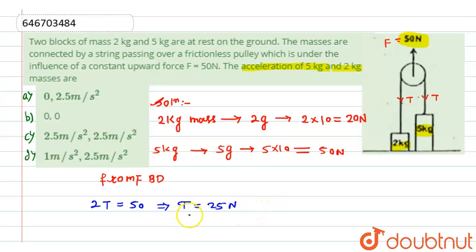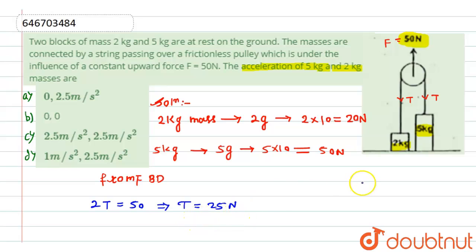The tension force is 25 newton. For the 2kg mass, the gravitational pull is 20 newton, so it can be lifted. For the 5kg mass, the gravitational pull is 50 newton, which is greater than the tension force of 25 newton, so the 5kg mass cannot be lifted, and hence its acceleration will be zero.